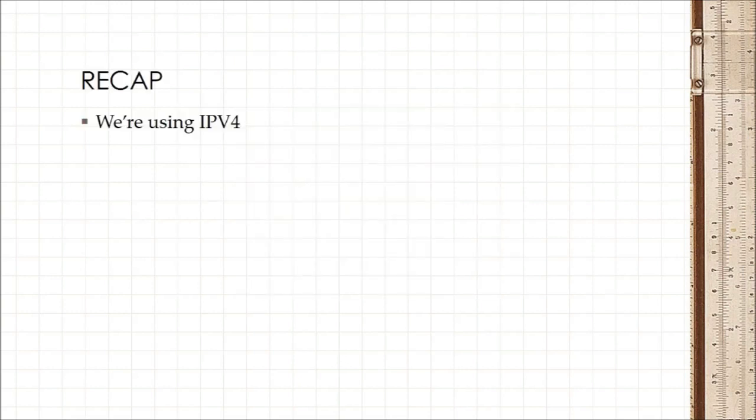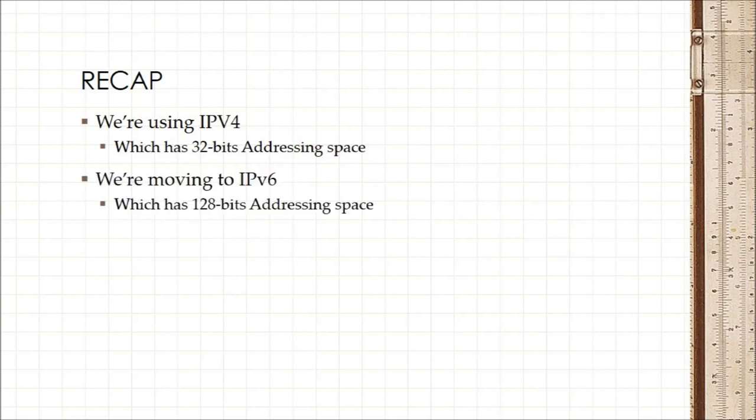So just to recap, we're currently using IPv4 that has 32 bits addressing space and we're moving to IPv6 that has 128 bits of addressing space and the reason why we need that is because we need more space on the Internet.